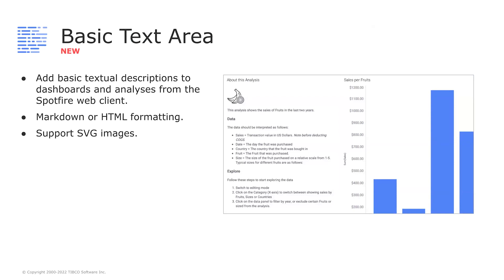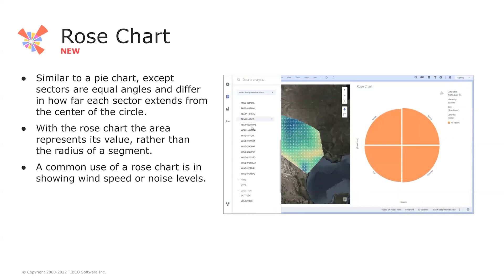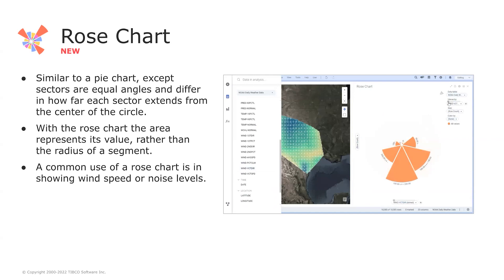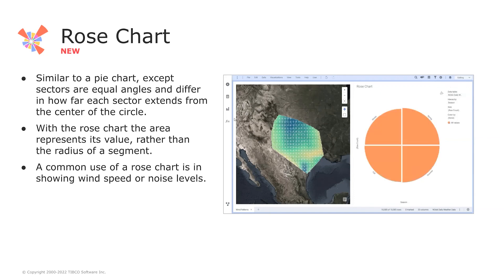We have a few new visualizations available. First is the basic text area, which allows you to add simple text areas from the Spotfire web client, so you can add textual descriptions to your analyses or dashboards. This visualization supports custom formatting using Markdown or HTML, and it also supports displaying SVG images. We also have a new visualization type — the rose chart. It looks similar to a pie chart, except the sectors' angles are equal and their size differs in how far they extend from the center of the circle. The value is represented by the area of a sector rather than its radius. This chart type is commonly used for showing wind speeds or noise levels.